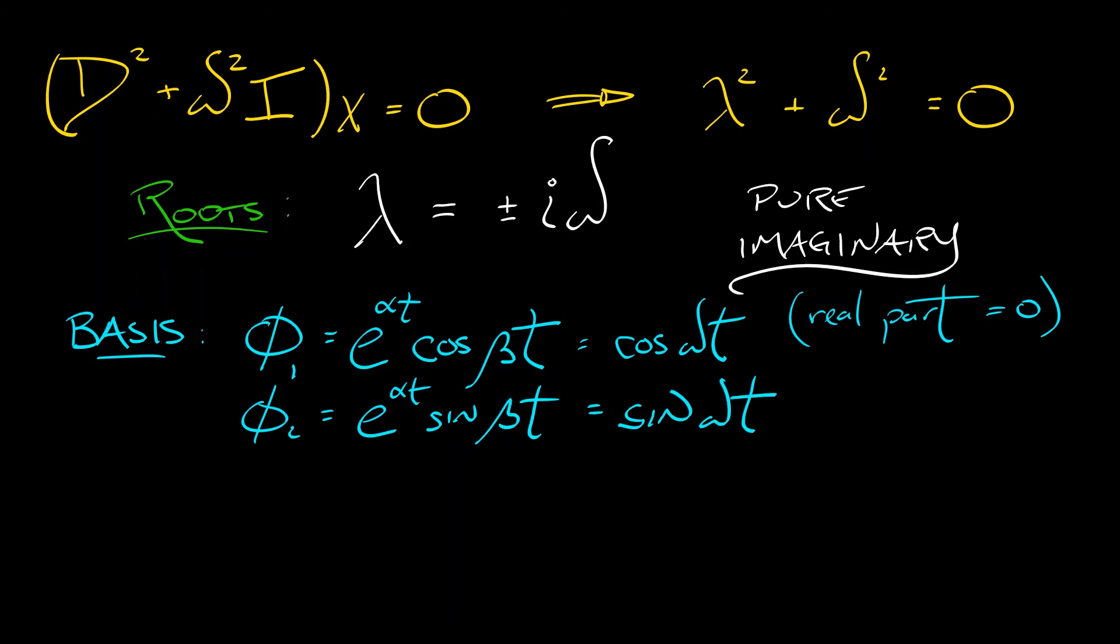This leads to a general solution for x(t) as being some constant c₁ times cos(ωt) plus your second constant c₂ times sin(ωt). Where again, in practice, these constants are going to depend on the initial angle, the initial angular velocity.